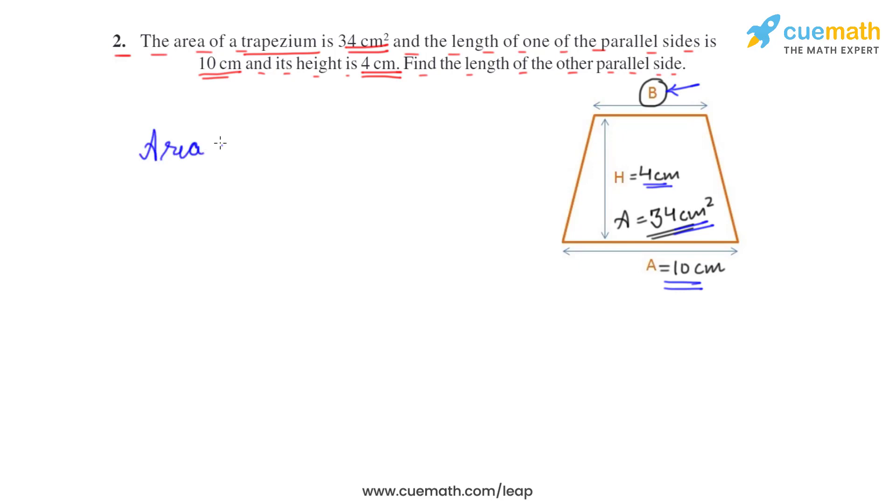What they have given: the area of trapezium is 34 square centimeters. We know the formula for area is half into sum of parallel sides. So let's say the parallel sides are a and b, so a plus b times height h equals 34.